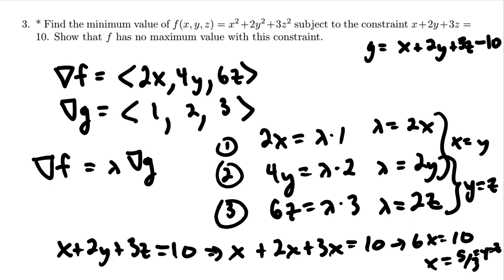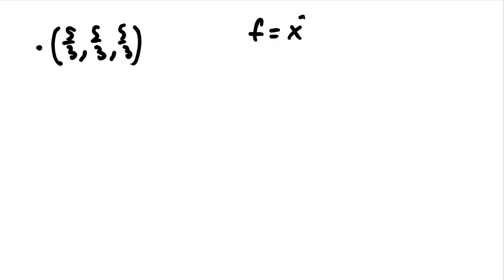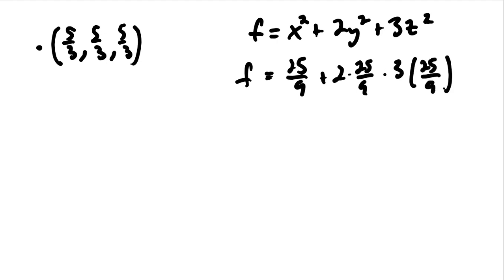Okay, so we've got this point, 5 thirds, and that's the only point that comes out of Lagrange. Your function is x squared plus 2y squared plus 3z squared. So the function value at 5 thirds is going to be 25 ninths, 2 times that 25 ninths, 3 times that 25 ninths. That'll give us 6 of those 25 ninths which can be reduced then. That's 50 over 3.